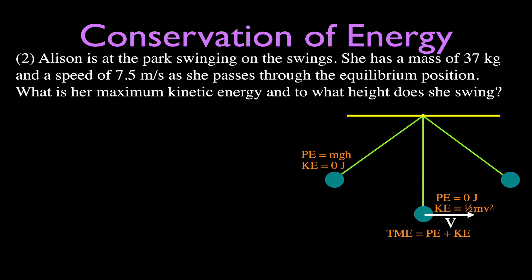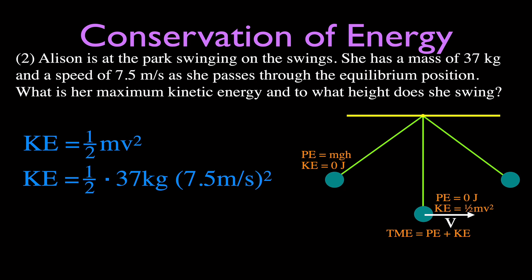Problem two: Allison is at the park swinging on the swings. She has a mass of 37 kilograms and a speed of 7.5 meters per second as she passes through the equilibrium position. We want to know her maximum kinetic energy and to what height she will swing. Her maximum kinetic energy is simply one-half mv squared: one-half times 37 times 7.5 squared, which equals 1,040 joules.